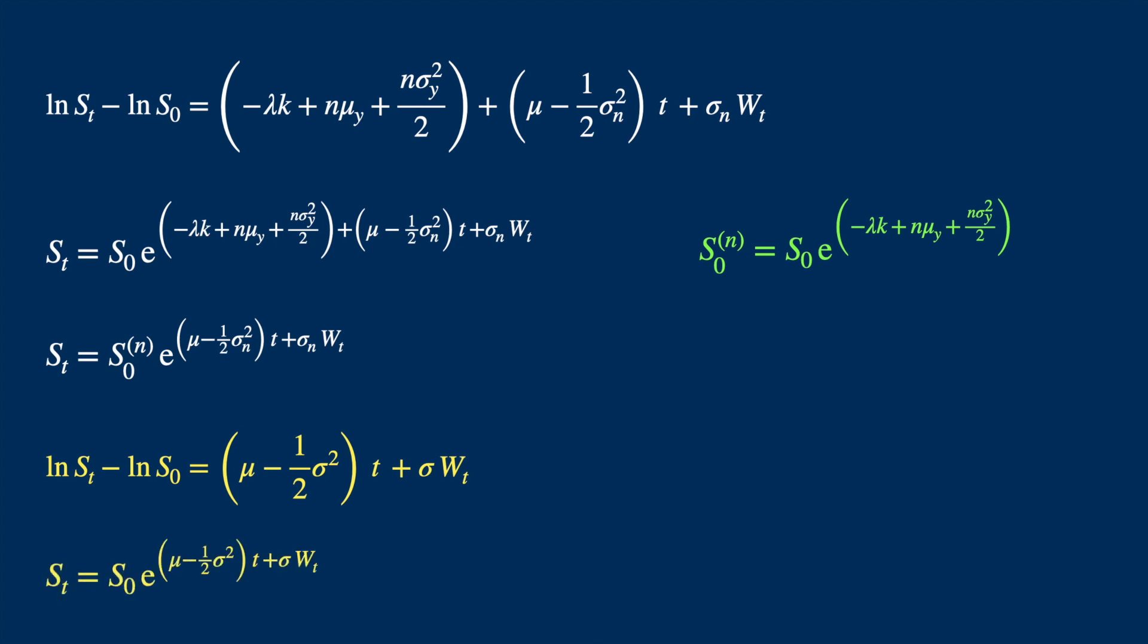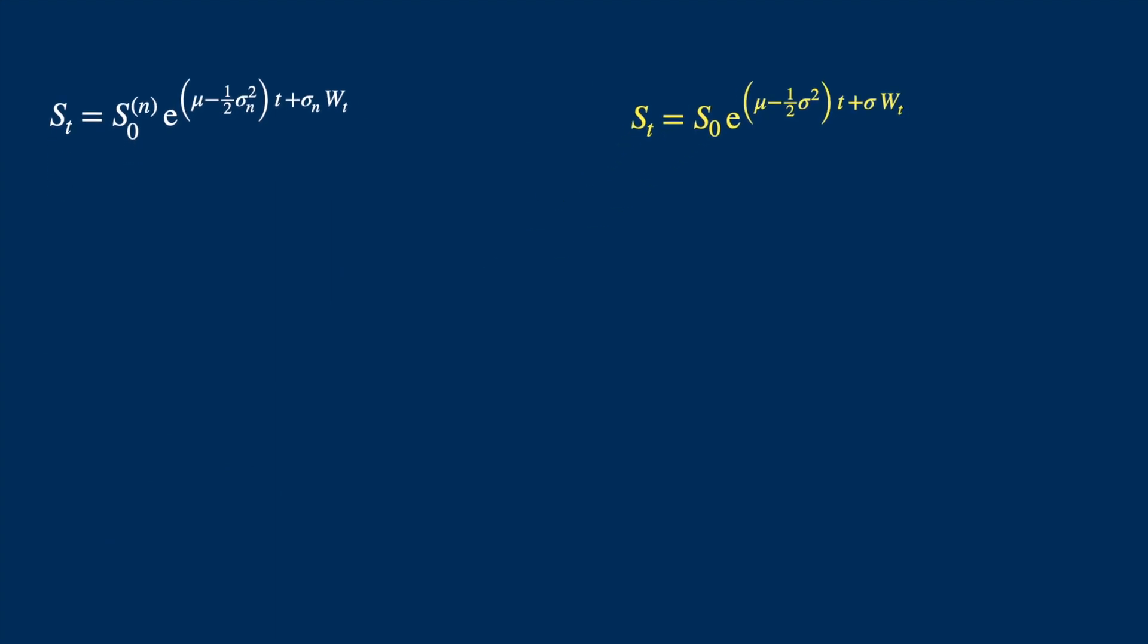So we have something like Black-Scholes, except the definition of the initial stock price and the volatility are different. This is because we kind of found a way to embed the jumps into the process. As you can see we are almost there now.